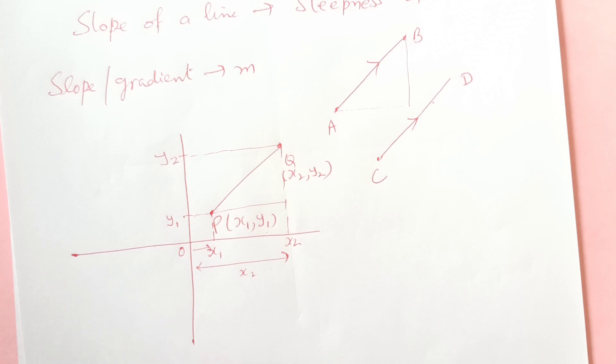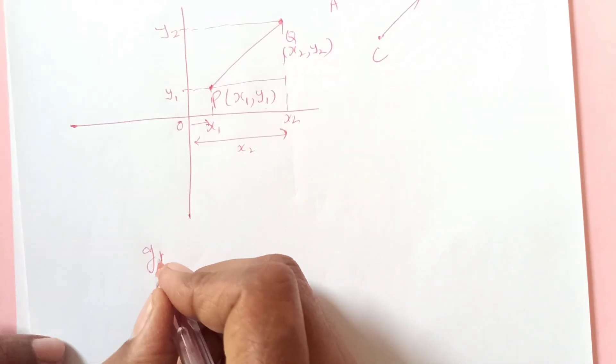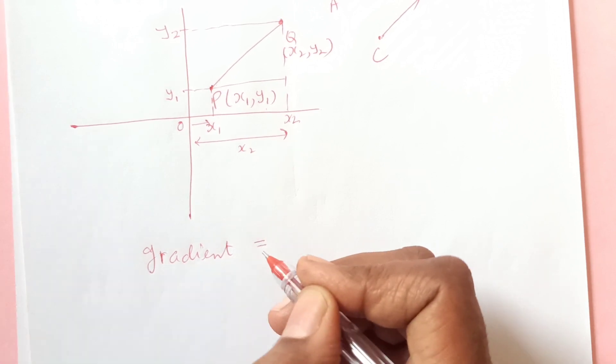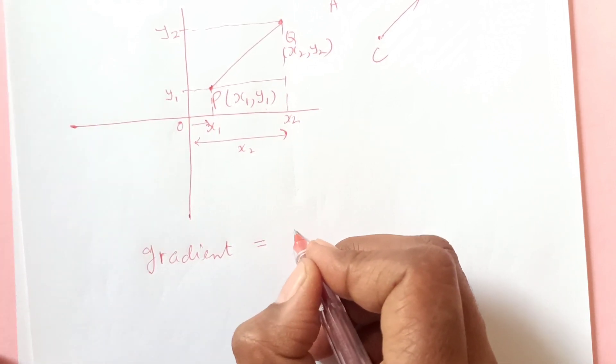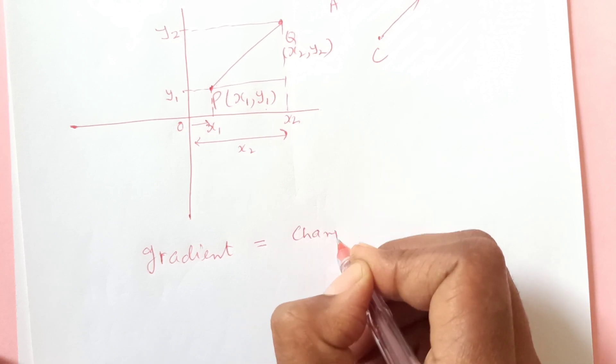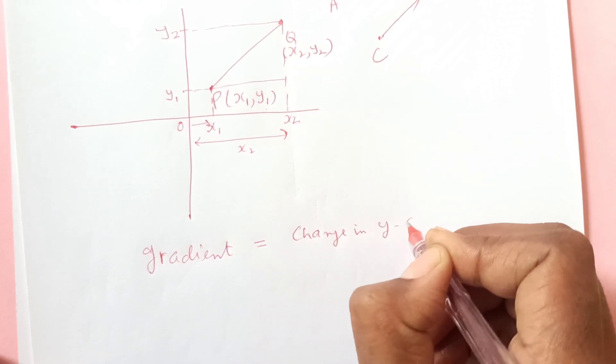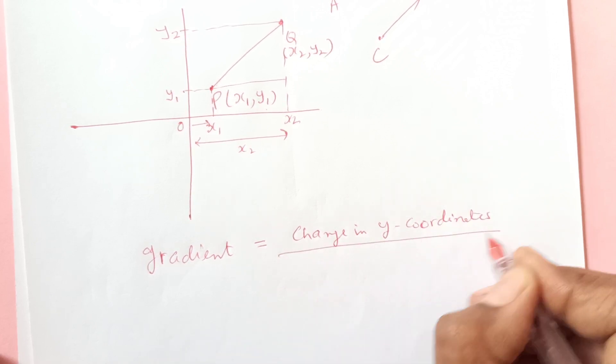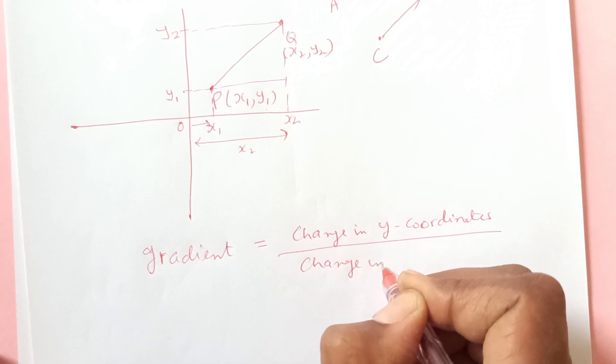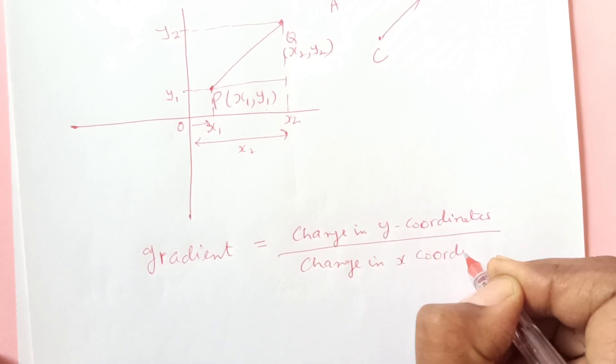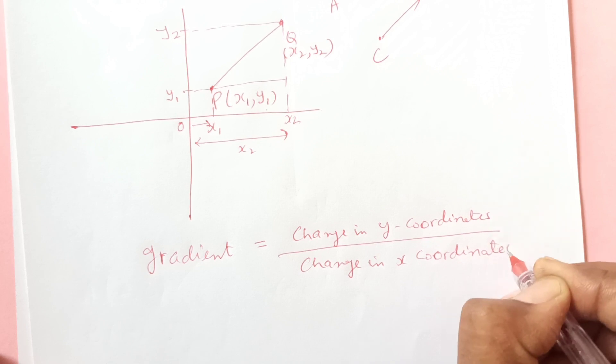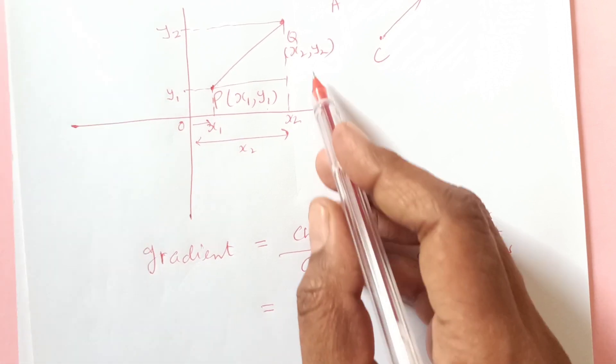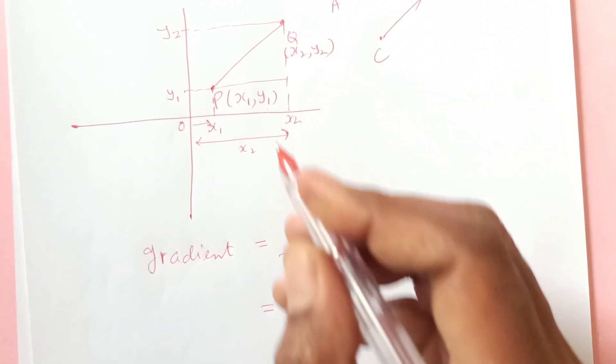So gradient is given by change in y coordinates divided by change in x coordinates, meaning to say that the change in y coordinates is y2 minus y1, over x2 minus x1.